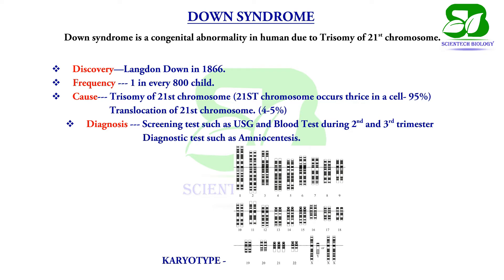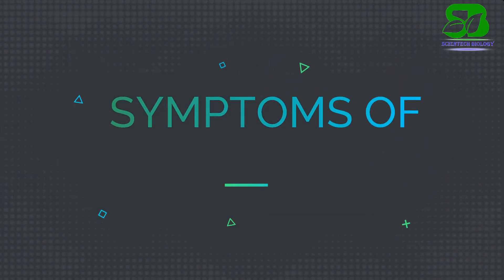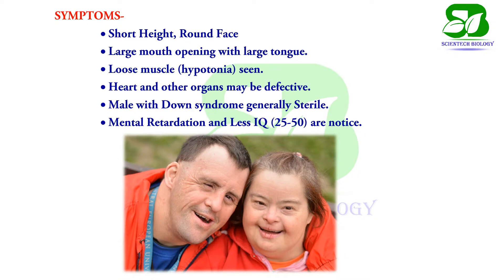This disorder can be diagnosed in the second and third trimester of pregnancy by ultrasonography or amniocentesis. The symptoms include short height with a round face, large mouth opening with a large tongue, defective heart, and mental retardation.